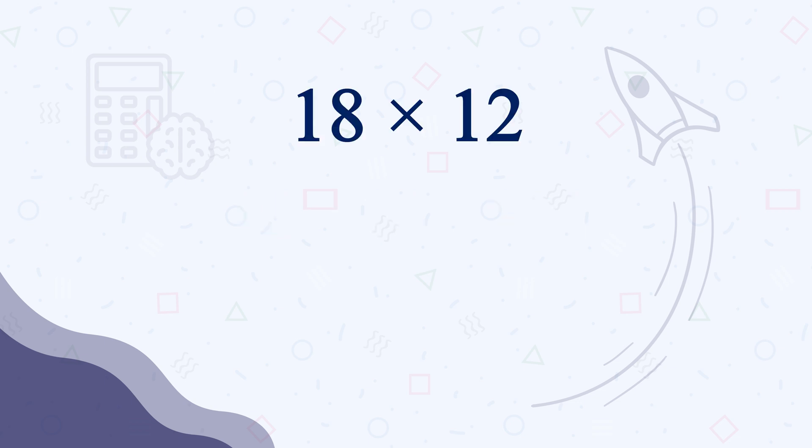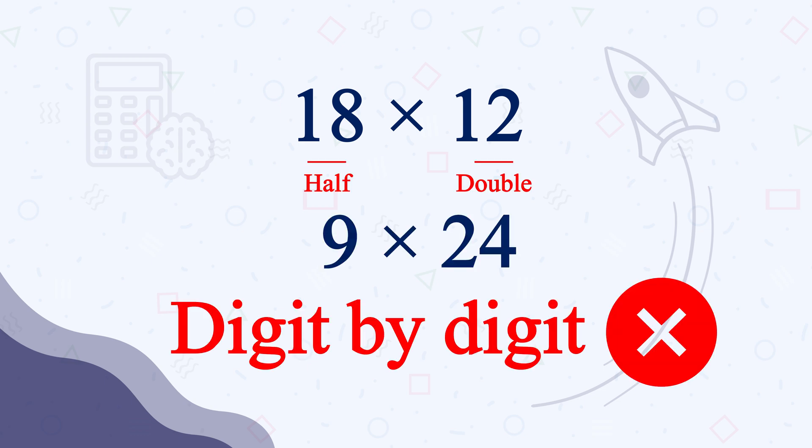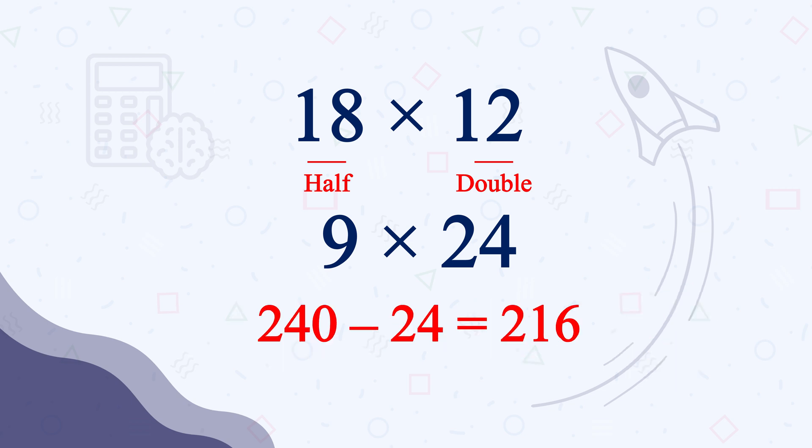Let's multiply 18 times 12. You can half the first number and double the other one. It will be 9 times 24. Now what will you do? Will you multiply digit by digit? No, you can easily do it by subtracting 24 from 240. Let me break it down for you.